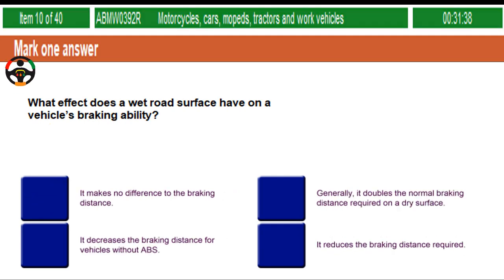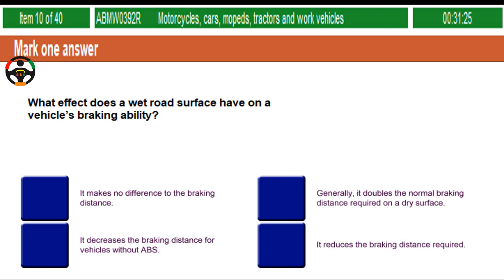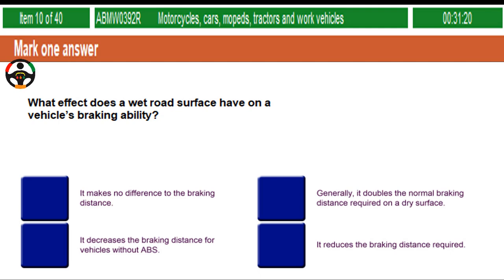What effect does a wet road surface have on a vehicle's braking ability? It makes no difference to the braking distance. Generally, it doubles the normal braking distance required on a dry surface. It decreases the braking distance for vehicles without ABS. It reduces the braking distance required.